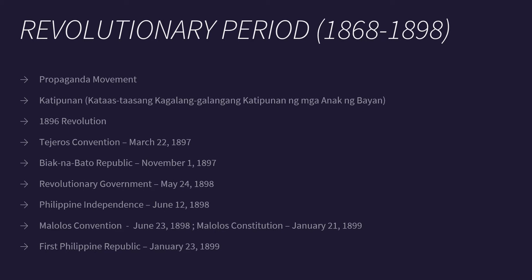The death of Jose Rizal sparked the beginning of the 1896 Revolution. As the Katipunan grew, it separated into two factions: the Magdalo, led by Emilio Aguinaldo, and the Magdiwang, led by Andres Bonifacio. They held a meeting called the Tejeros Convention on March 22, 1897, and elected a president, where Emilio Aguinaldo won.